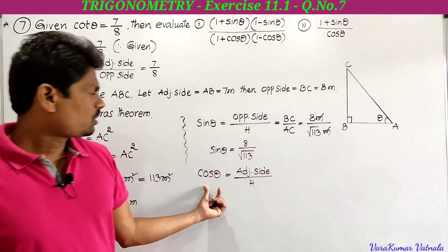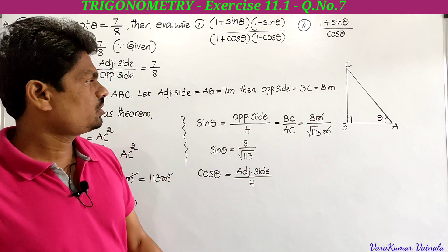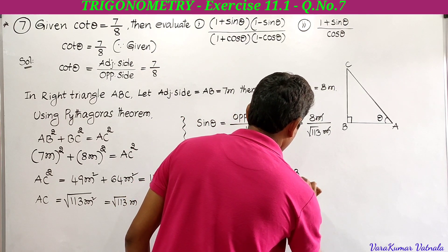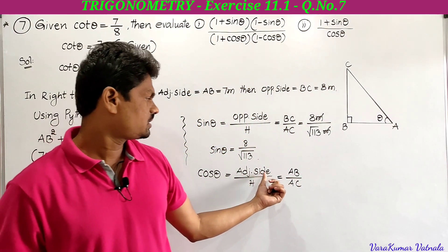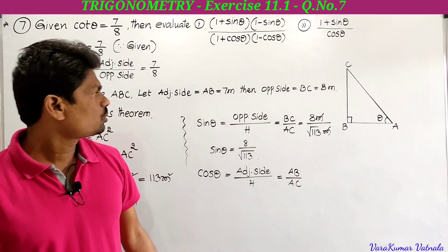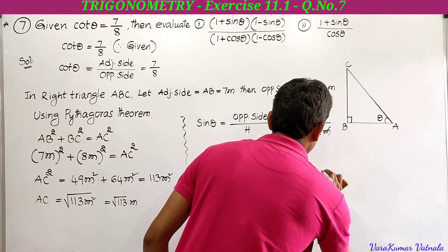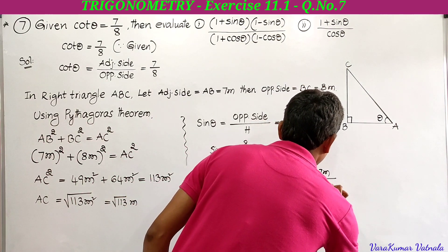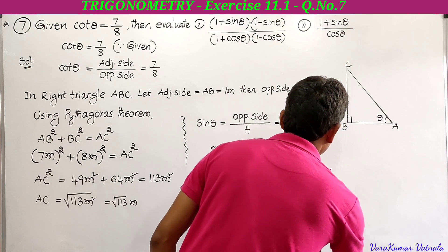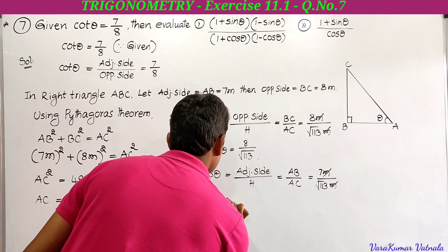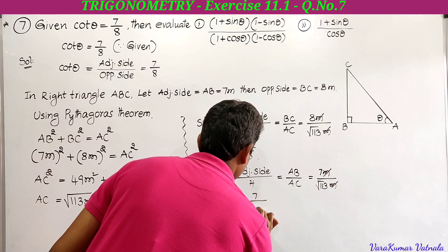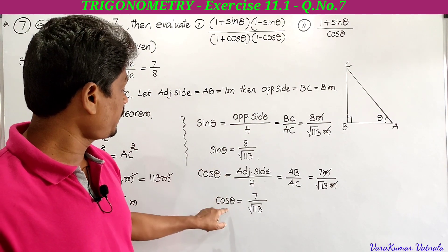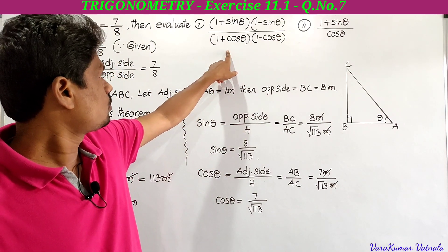Cos theta equals adjacent side to theta divided by hypotenuse, that is AB by AC. AB equals 7m and AC equals square root of 113m. The m's cancel, giving cos theta equal to 7 by square root of 113. Now we substitute sin theta and cos theta into the first expression.